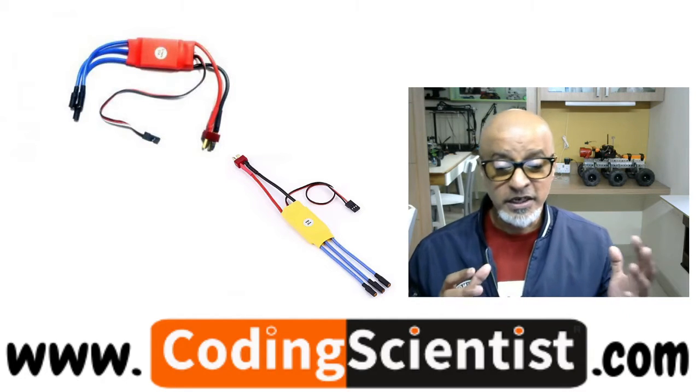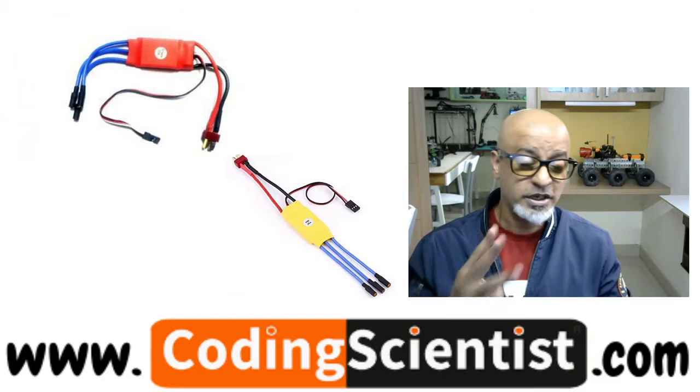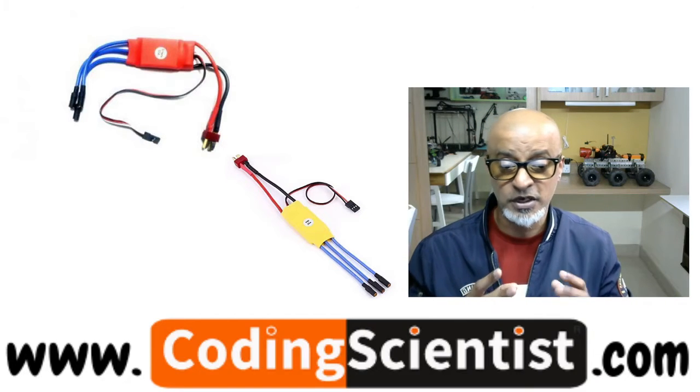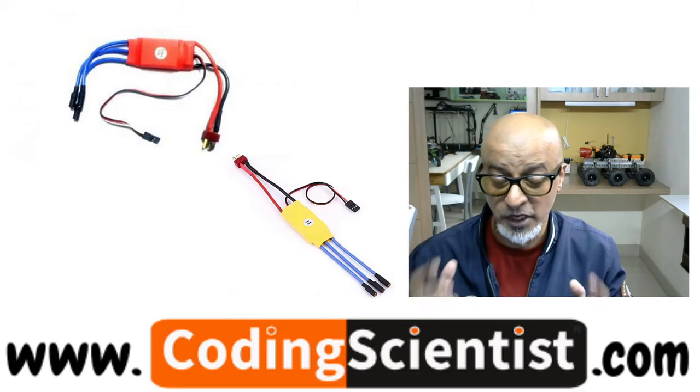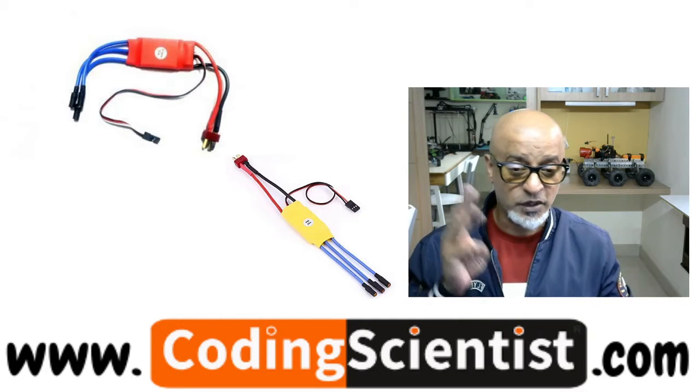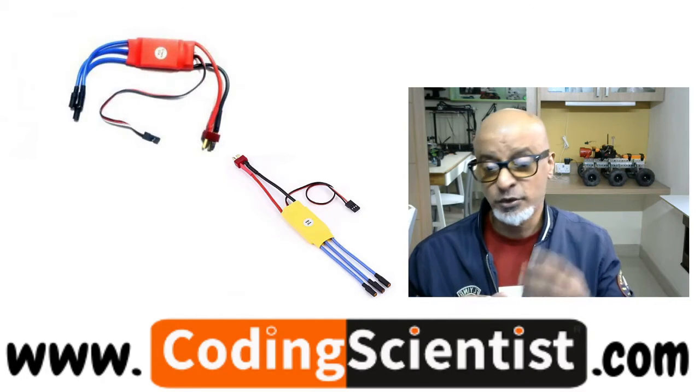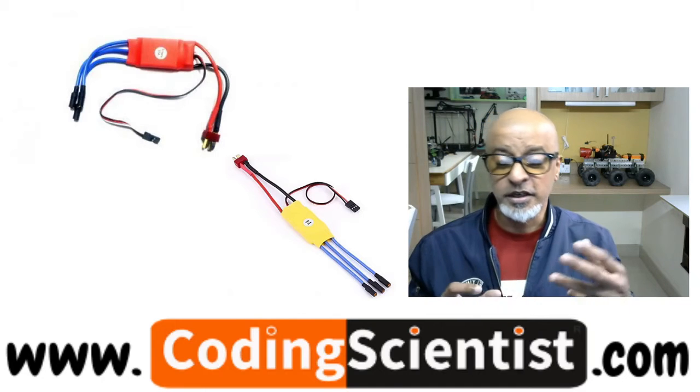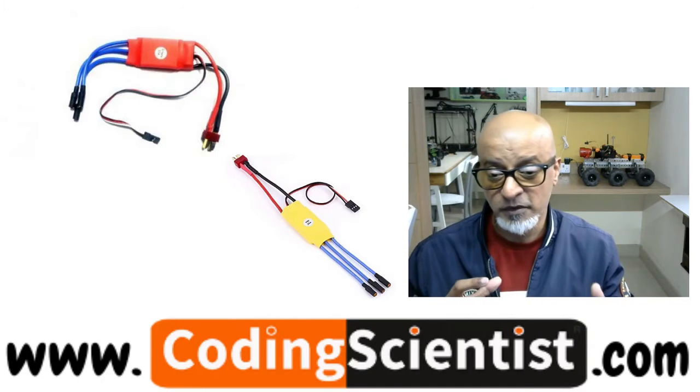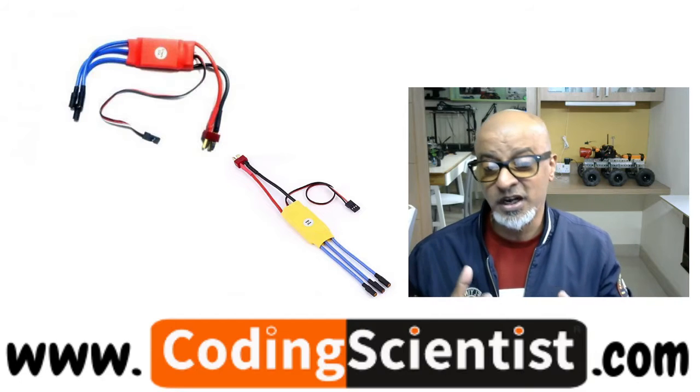It converts the DC battery power into three-phase AC for driving the brushless motors. That's why there are three different wires—you can see it in the picture, you can see it in the component. Basically, it converts DC battery power into three-phase AC for driving the brushless motors.